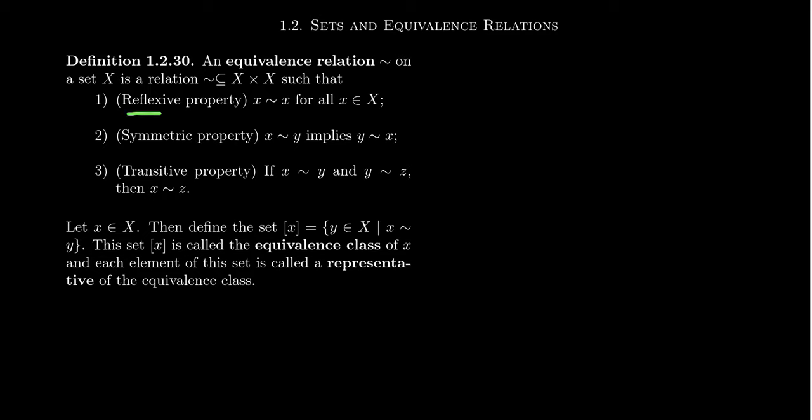The first axiom is the reflexive property: every element is related to itself. If you take any element X inside the set, X will be related to X — or equivalently, X is equivalent to itself. When thinking about equivalence relationships, we want to generalize the notion of equality. With equality of numbers, X equals X, and that's a property we want for general equivalence relationships.